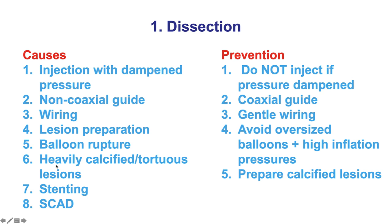Some patients do present with spontaneous coronary dissection. How to prevent dissections? Most importantly, do not inject if there is pressure dampening. This is one of the basic rules of coronary angiography and PCI that should be respected in all cases. Get as coaxial a guide position as possible, avoid aggressive wiring maneuvers, avoid using oversized balloons and high inflation pressures, and when there are calcified lesions, adequate preparation prior to stenting is important as well.